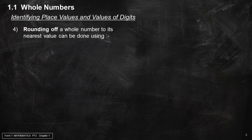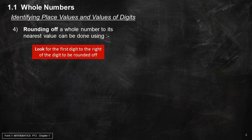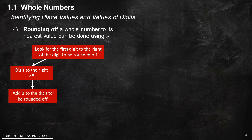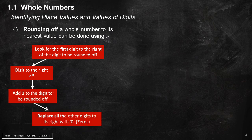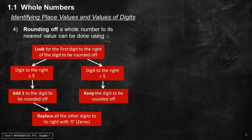Rounding off a whole number to its nearest value can be done using these rules. Look for the first digit to the right of the digit to be rounded off. If that digit is greater than or equal to 5, add 1 to the digit to be rounded off, then replace all digits to its right with 0. If that digit is smaller than 5, keep the digit to be rounded off, then replace all digits to its right with 0.